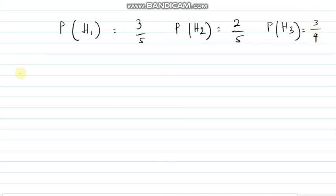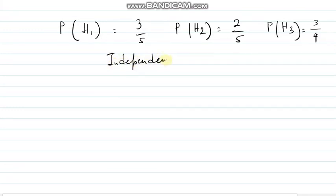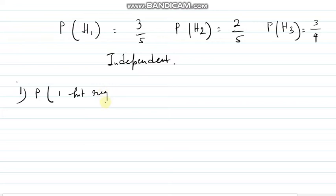So first one I am doing — just check. Now they are independent events because if I hit or not in the first shot, that does not affect my second shot. Similarly, it is going to be the same for the third shot. So these are independent events — please be very careful about this. So now first case: probability that only one hit is registered.